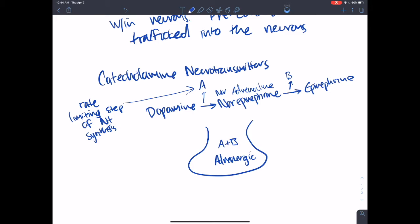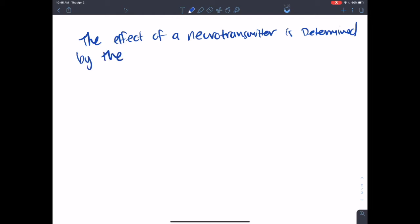But the kind of last thing I want to talk about in this first neurotransmitter lecture is this idea that neurotransmitters don't inherently know what effect they have. And that's anthropomorphizing a little bit, but what I mean to say is that the effect of a neurotransmitter is determined by the activity of the receptor. Activity of the receptor that the neurotransmitter binds to.